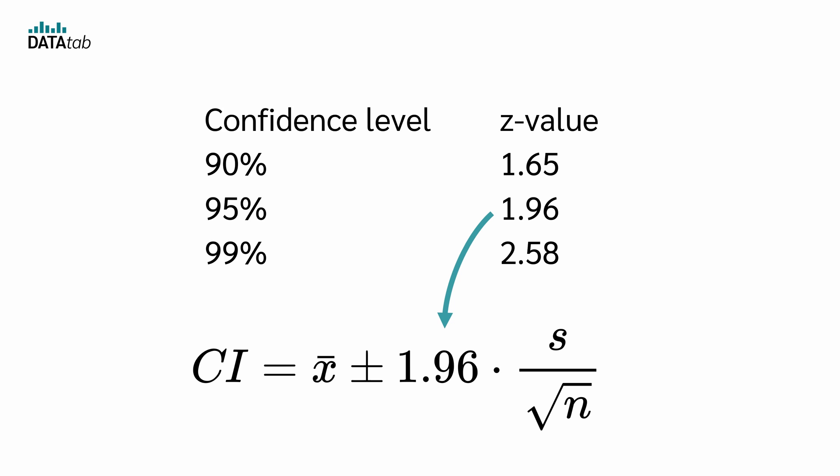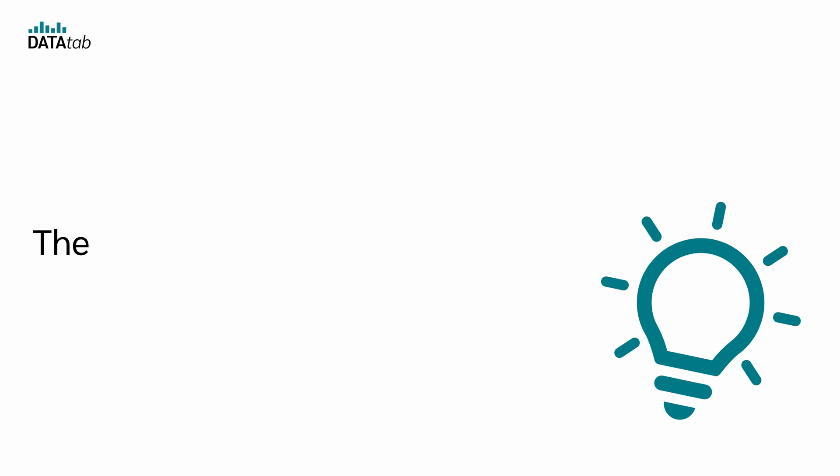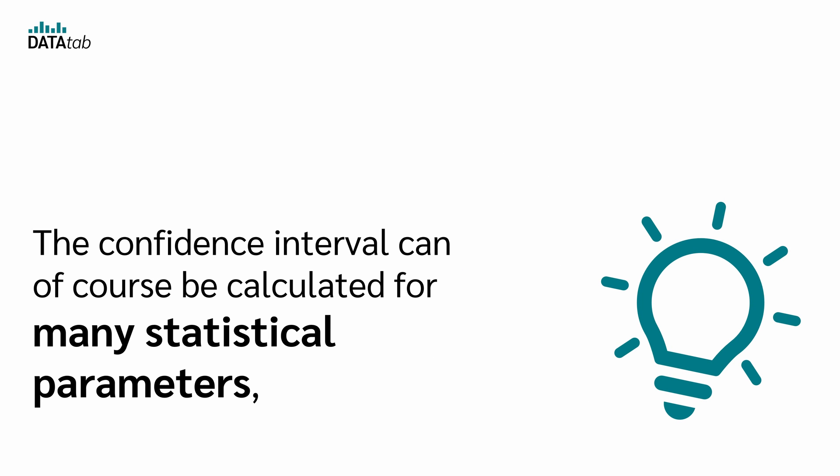Using this, the confidence interval can be expressed as the sample mean plus minus 1.96 times the standard deviation divided by the square root of the sample size. The confidence interval can of course be calculated for many statistical parameters, not only for the mean value.